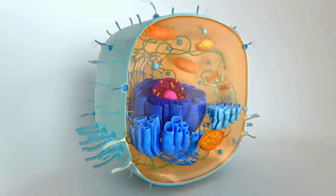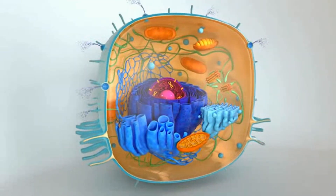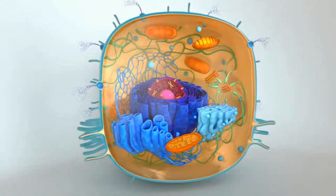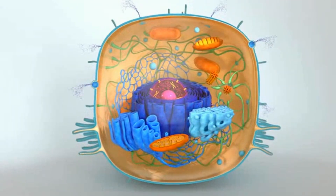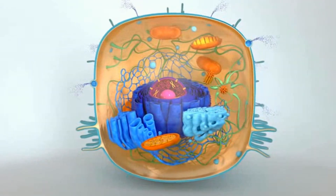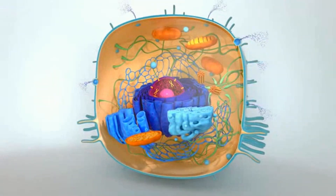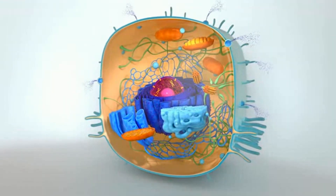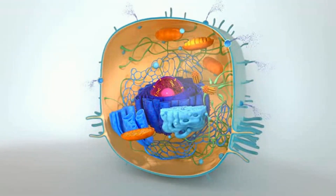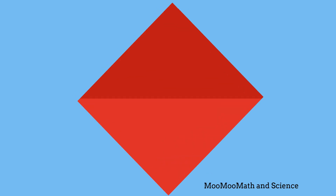So in summary, a vacuole is used for storage of water, waste, and other materials, and helps to regulate the amount of fluid inside a cell. If you would like to know more about the cell's organelles, this playlist will help. And as always, thanks for watching.